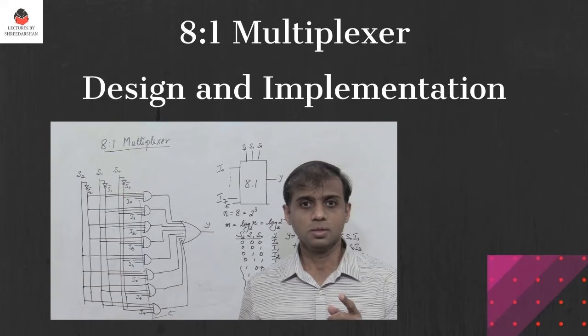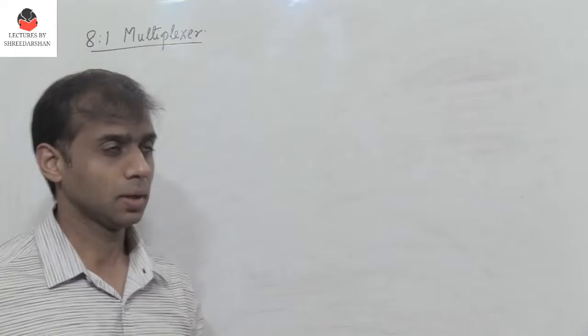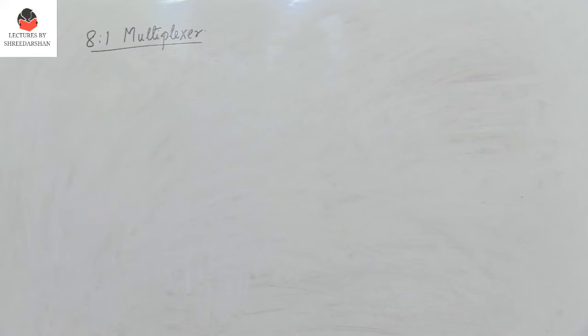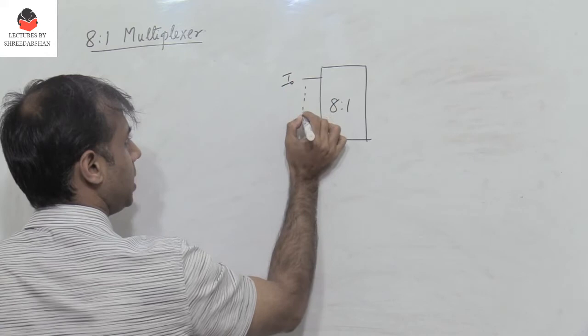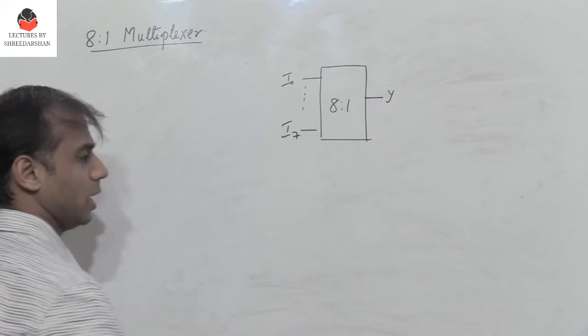How do we design an 8-to-1 multiplexer? An 8-to-1 MUX means that there are 8 input lines. So we have 8 input lines, let them be i0 to i7, and there is a single output, let this be y.